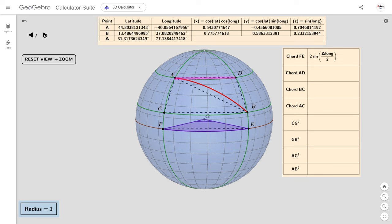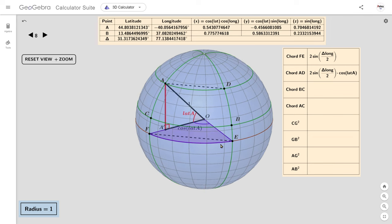But what about the chords AD and BC? While the longitude difference hasn't changed, these chords are no longer on great circles. We'll still use what we've just calculated for chord FE, but we'll need to multiply that result by the radius of the smaller circles, which will be cos lat A for the latitude circle through A and cos lat B for the latitude circle through B.